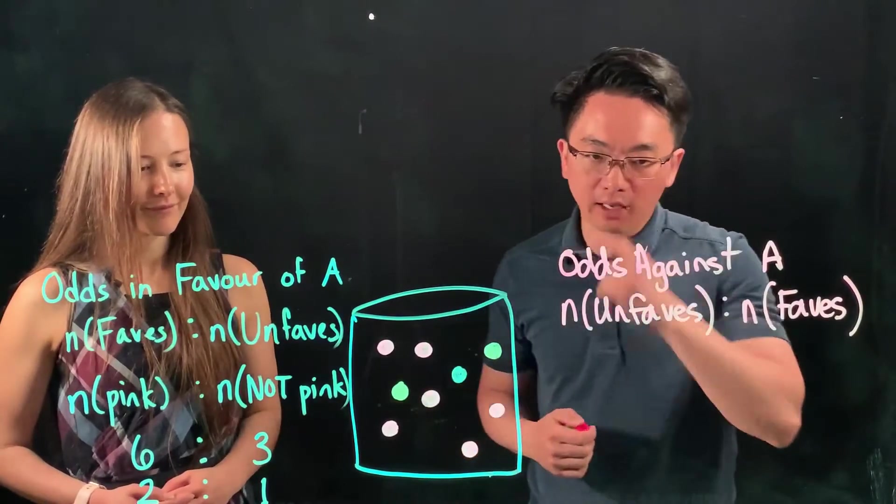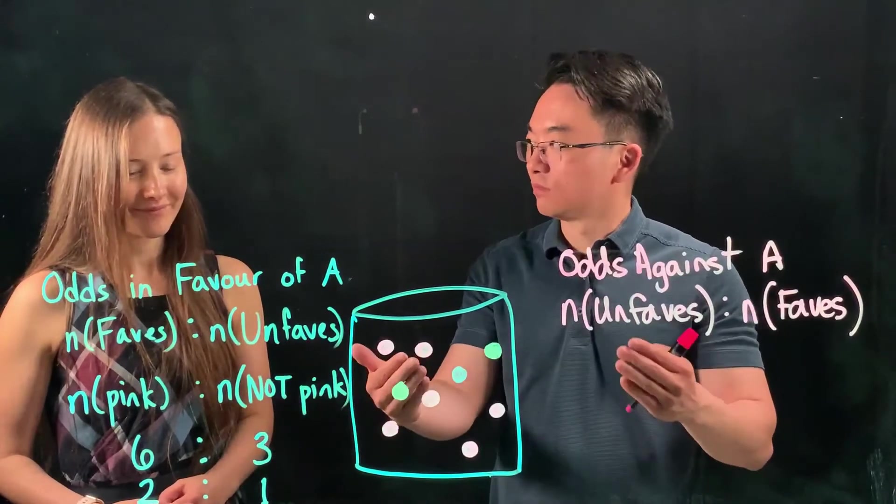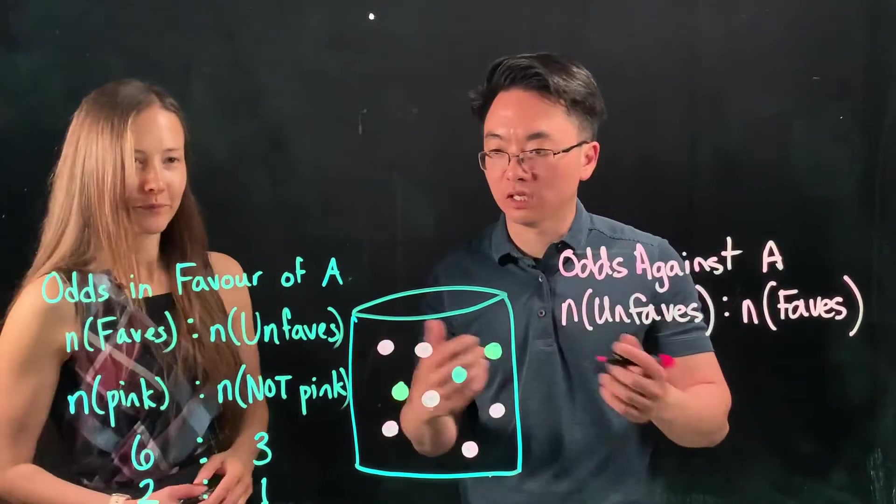So the odds against A would be, well, since I have the odds in favor, I can just write it in reverse order, right? So instead of six to three, three to six.